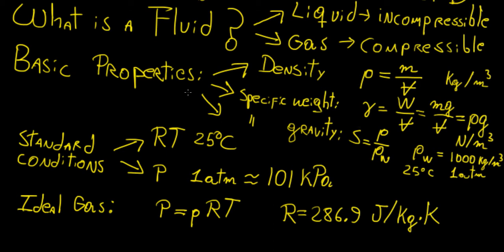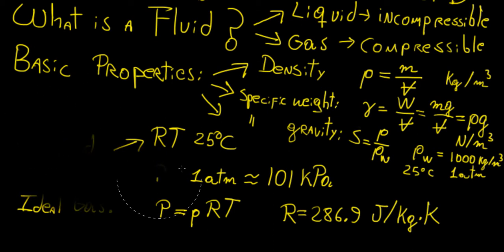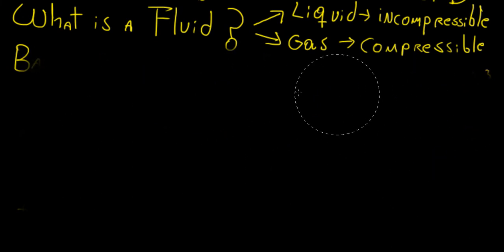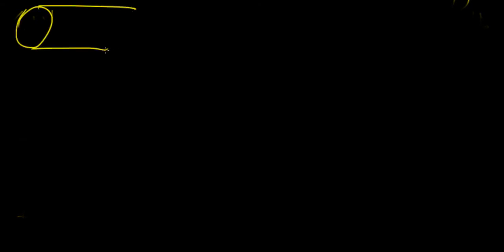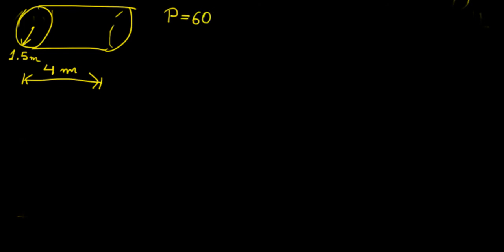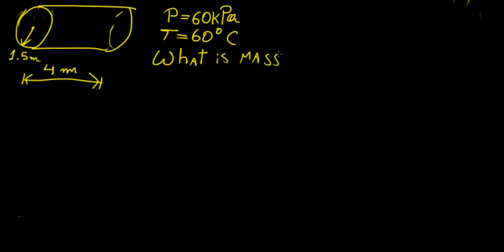Let's do a little example to show how these things come together. We have a cylindrical container with a radius of 1.5 meters and a length of 4 meters. Air is contained inside at a pressure of 60 kilopascals and a temperature of 60 degrees Celsius. We're asked to find the mass of the air contained within that cylindrical container.